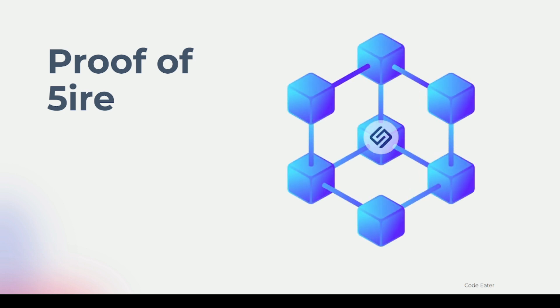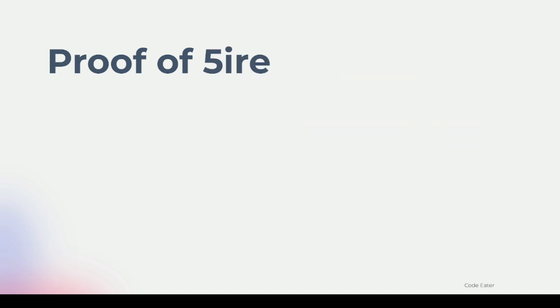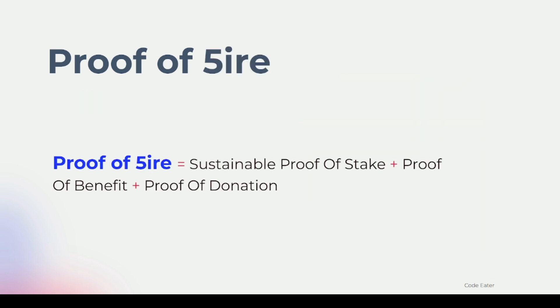The consensus that Fire Technology is actually using is called Proof of Fire. This Proof of Fire consensus consists of three things: Sustainable Proof of Stake, Proof of Benefit, and Proof of Donation. In this video, our main focus will be on Proof of Benefit.